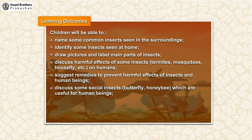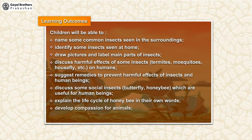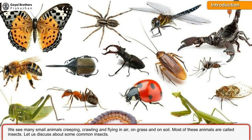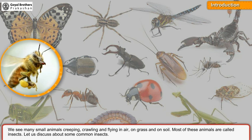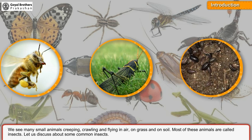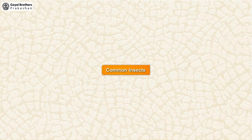Which are useful for human beings. Explain the life cycle of honeybee in their own words. Develop compassion for animals and a sensitivity towards the environment and living beings. We see many small animals creeping, crawling and flying in air, on grass and on soil. Most of these animals are called insects. Let us discuss about some common insects.